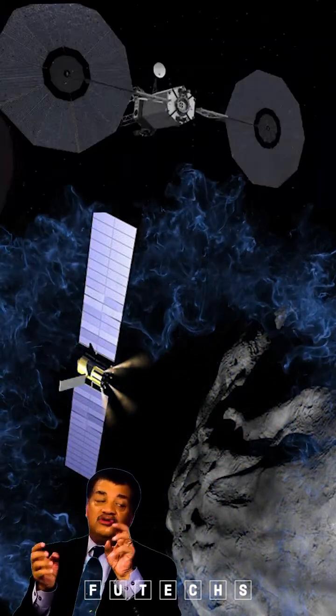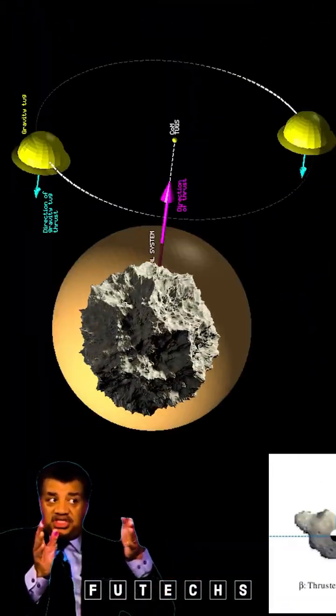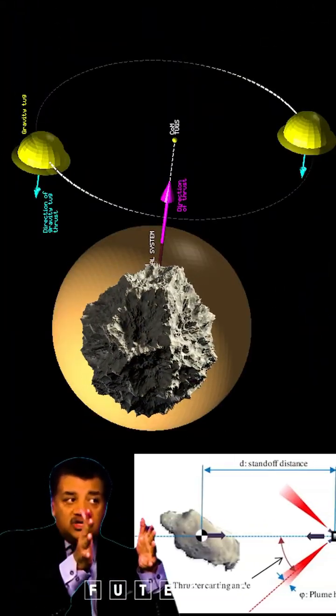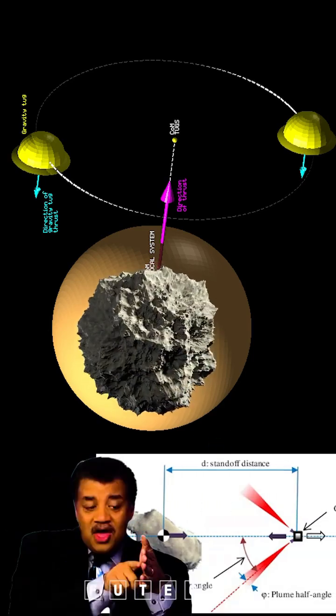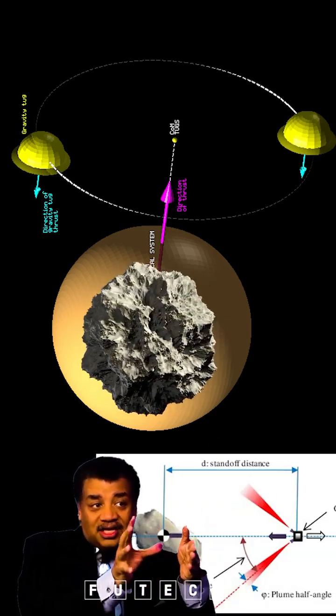You can have a gravitational tug. We can have a spacecraft that sits just ahead of it, and the two of them will want to drift towards one another. But you take the spacecraft and put a little retro rocket.